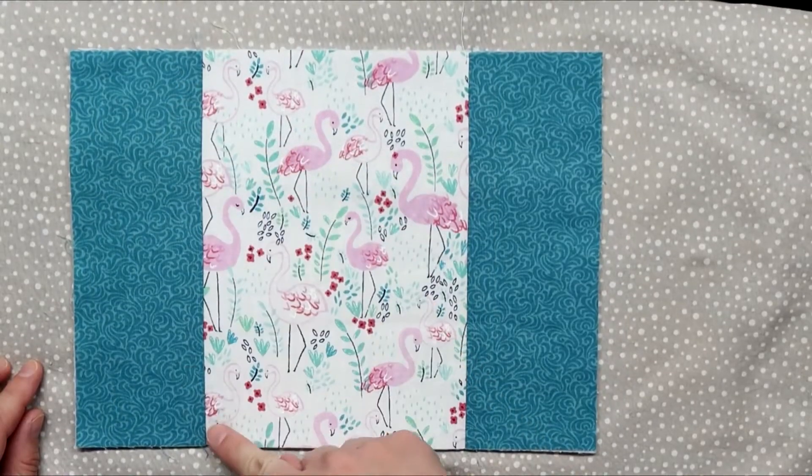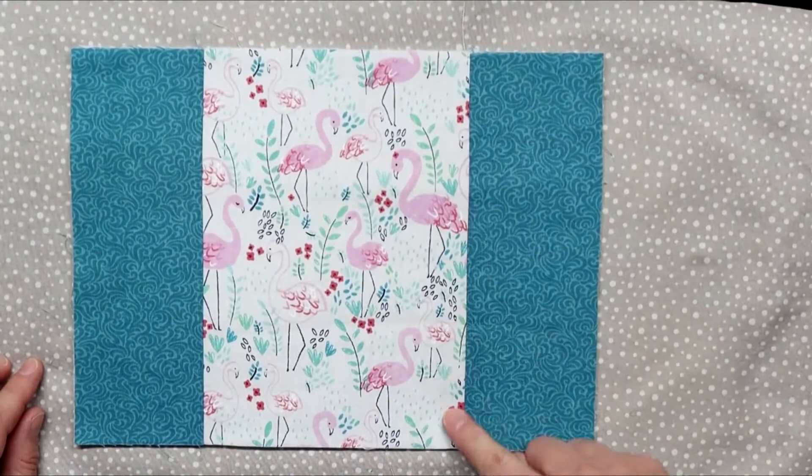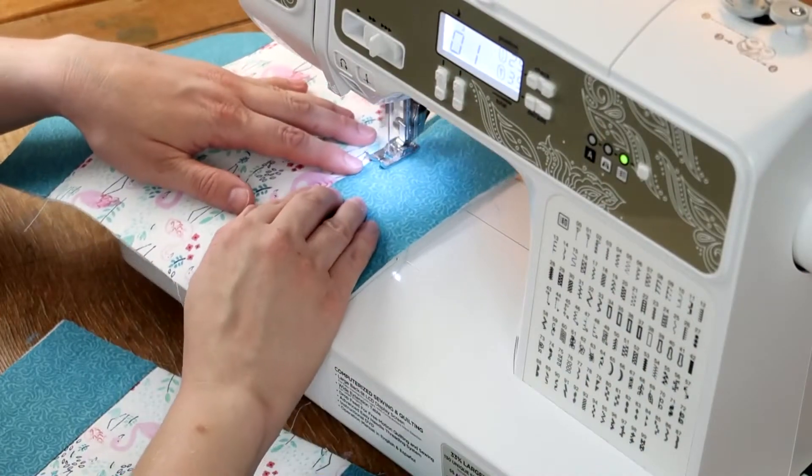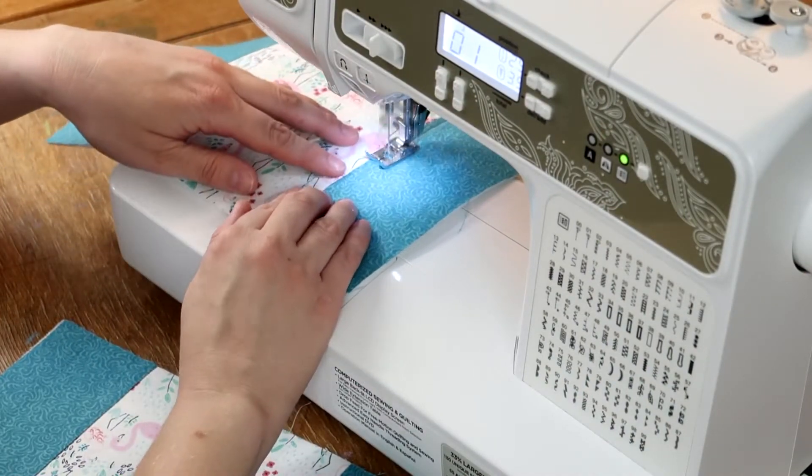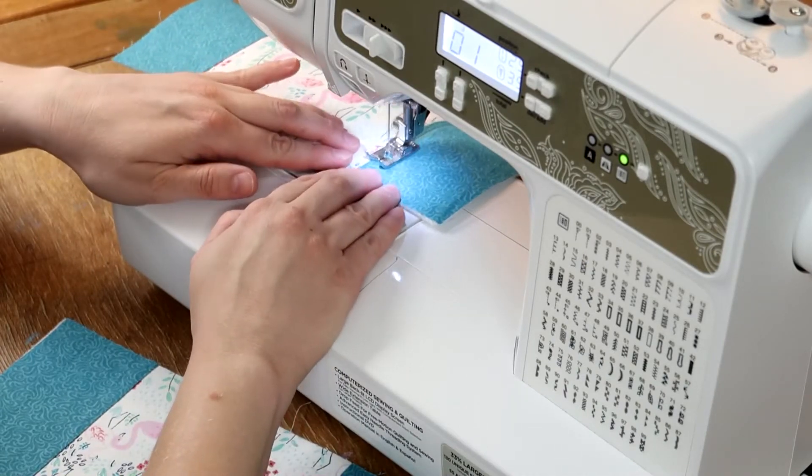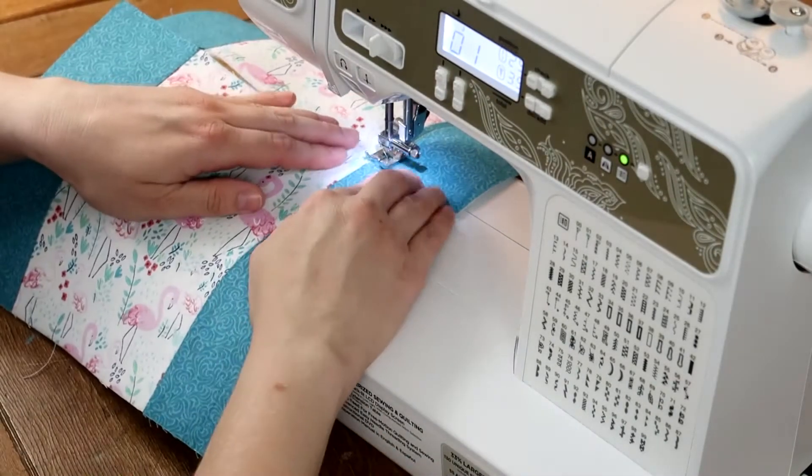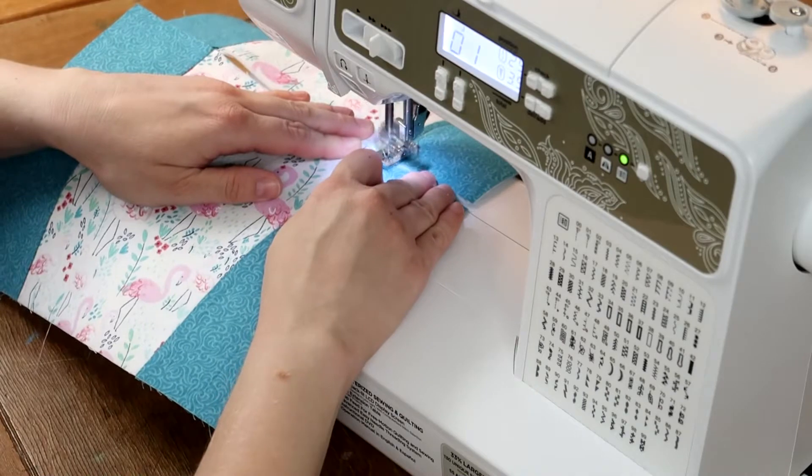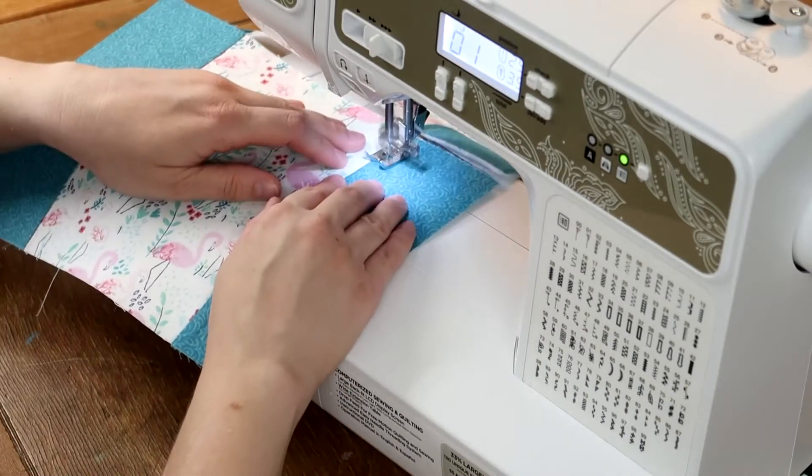Now do some decorative top stitching on either side of the seams. This will look pretty and also help it stay attached to the fusible fleece. I sewed a straight stitch about an eighth of an inch on either side of the seams. You can see I'm chain stitching the pieces through and this is going to help everything line up later.